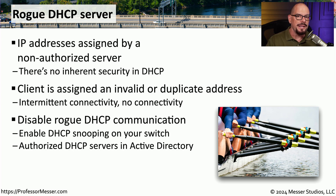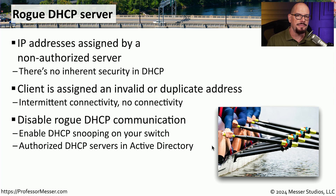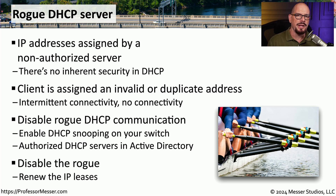Fortunately, there are ways to prevent someone from starting up their own DHCP server. In many enterprise switches, there's a feature called DHCP snooping that will examine all DHCP requests and only allow responses from a legitimate DHCP server. There's also a feature in Microsoft's Active Directory that determines what an authorized DHCP server is, and it will only allow those servers to hand out IP addresses. If you do find a rogue DHCP server on your network, your goal is to remove it and renew all IP addresses to ensure everyone has a legitimate IP.